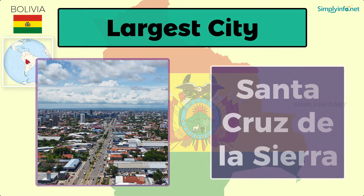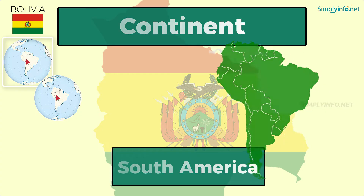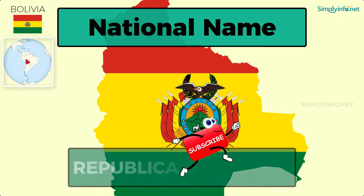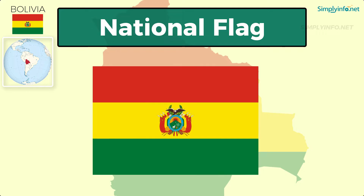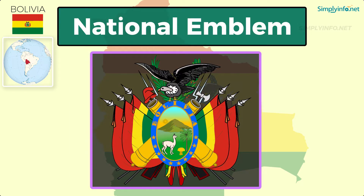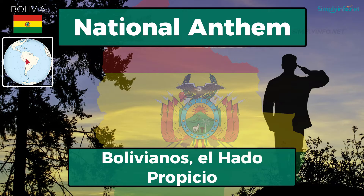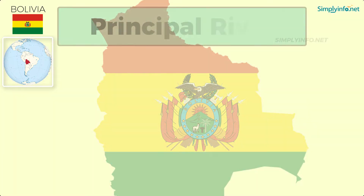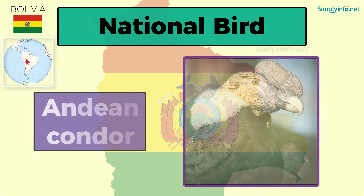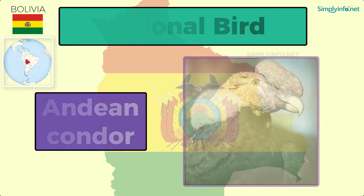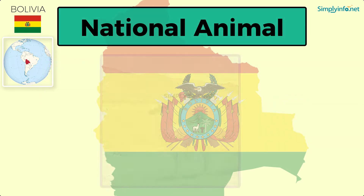Largest city: Santa Cruz de la Sierra. Continent: South America. National name: Republica de Bolivia. National flag, national emblem, national anthem: Bolivianos el Hado Propicio. Principal river: the Beni River. National bird: Andean condor. National flower: the kantuta and the patuju. National animal: llama.